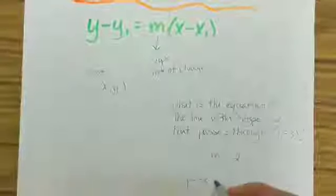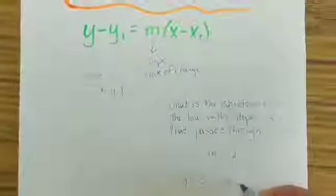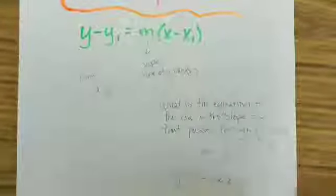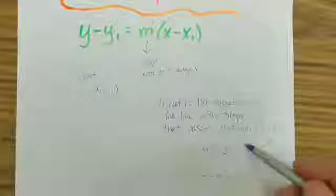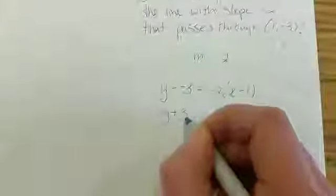y minus y1 equals m. In place of m, I'm going to go ahead and put my negative 2 times x minus x1, which is 1. So all I've done is replace the three values that I know. I've substituted those. Now down here, what I can do when I have minus and negative is change that to a plus.